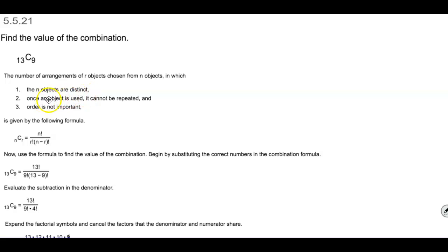once an object is used it cannot be repeated, and order is not important. So we have n factorial divided by r factorial times n minus r factorial.